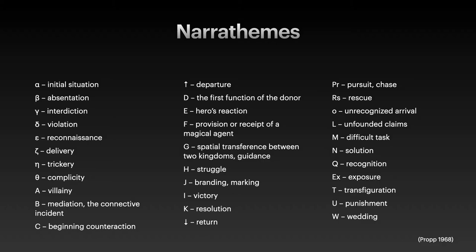The core of Propp's morphology are 31 narrative units, or narrathemes, that occurred in the analyzed folk tales after the initial situation. They are the basic primitives which tend to occur in the same order in the stories. Each of these narrathemes has a symbol — a Greek letter, an arrow, a Latin letter or two letters. The structure of a story can then be presented as a sequence of these symbols.